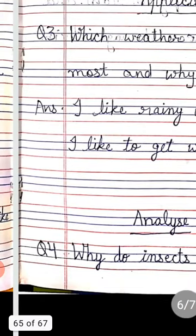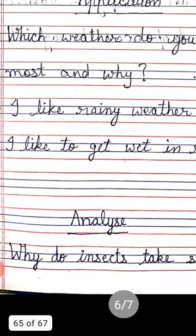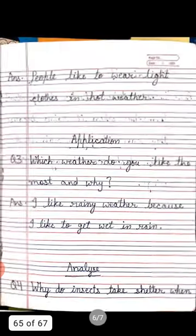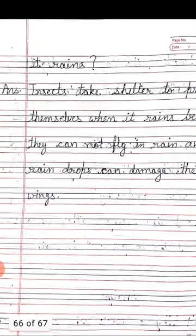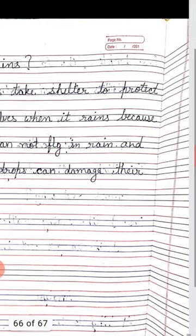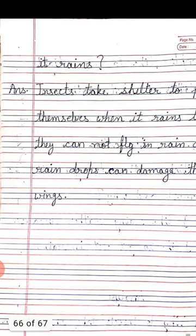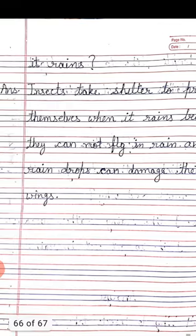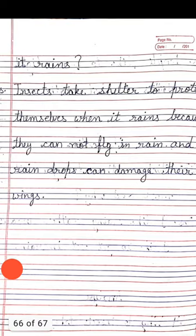Now come to Section D: Analyze. Question 4: Why do insects take shelter when it rains? Answer: Insects take shelter to protect themselves when it rains because they cannot fly in rain, and raindrops can damage their wings.